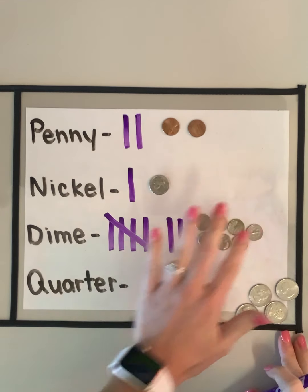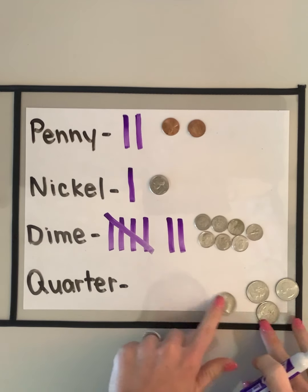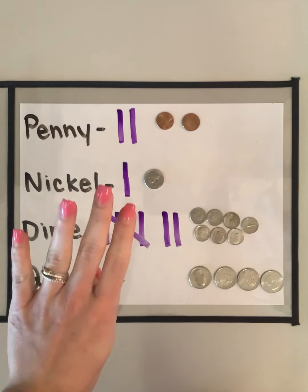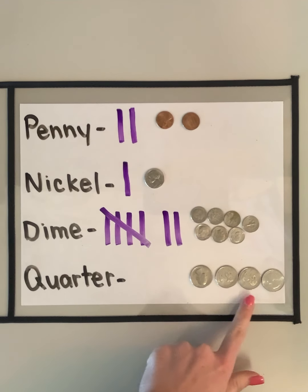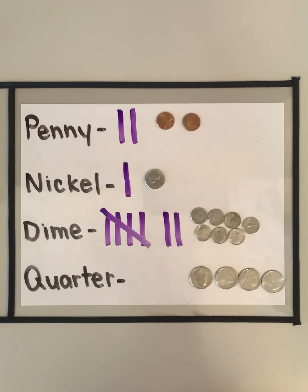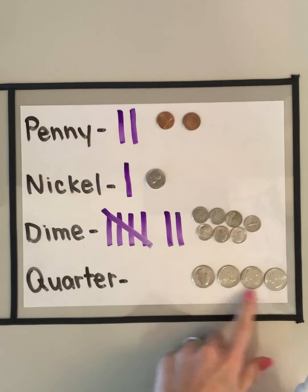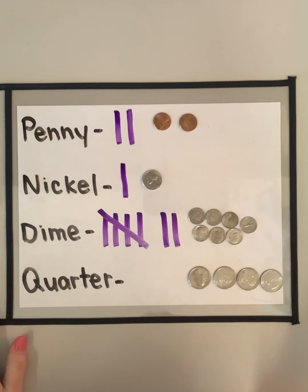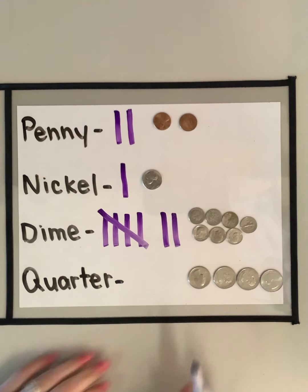Now my last coin was a quarter. How many quarters did I have in my purse? Show me with your fingers — four. One, two, three, four. I want you to pause the video, get a piece of paper and a pencil, and draw four tally marks for these quarters. Four tally marks. When you're done, push play. You should have paused and drawn four tally marks — one to represent each quarter.